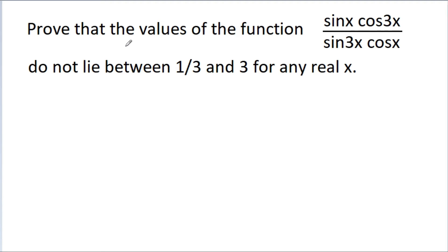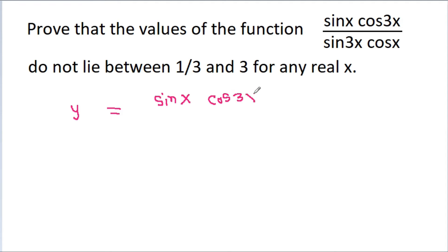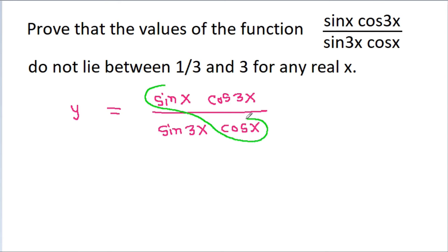In this video, we have to prove that the values of the function sin(x)cos(3x) / sin(3x)cos(x) do not lie between 1/3 and 3 for any real x. So the function is y = sin(x)cos(3x) / sin(3x)cos(x), where sin(x)/cos(x) = tan(x) and sin(3x)/cos(3x) = tan(3x).